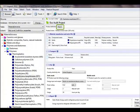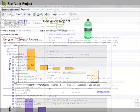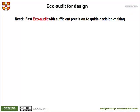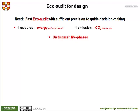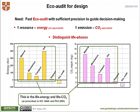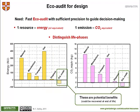CES EduPack is used at more than 800 universities and colleges worldwide. One of its tools is the EcoAudit tool. This tool was developed both to be used in design, where typically over 70% of a product's environmental impact becomes fixed, and to help introduce students to concepts around sustainability. It has to be quick and easy to use, and while its results are approximate, we need to retain sufficient discrimination to differentiate between alternative choices. This is not a tool to calculate a full LCA, and just concentrates on energy consumption and carbon dioxide emissions. The life phases are separated out so that the dominant phase can be seen and acted on first.